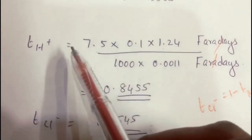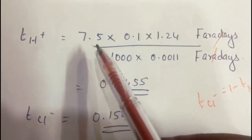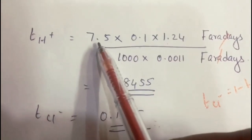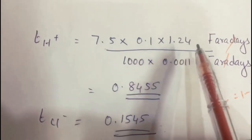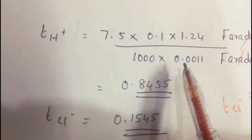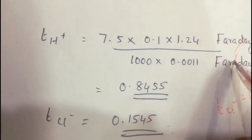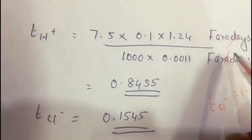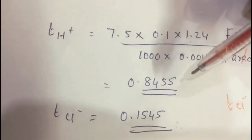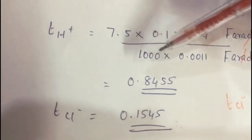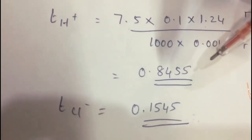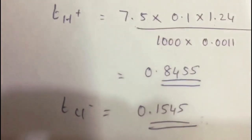Substituting values: T(H⁺) = (1.27 × 0.1 × 7.5) / (1000 × 0.0011) = 0.8455. Then T(Cl⁻) = 1 − T(H⁺) = 1 − 0.8455 = 0.1545.